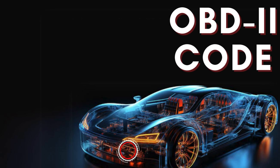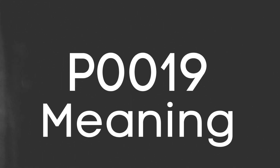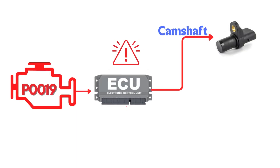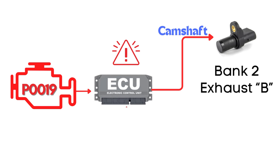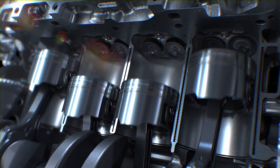Hey there! In this video, we're diving into everything you need to know about OBD-II trouble code P0019. The P0019 code indicates that the ECM has detected a correlation error between the camshaft position sensor for bank 2, specifically the exhaust camshaft, and the crankshaft position sensor. This means there's a misalignment between the camshaft and crankshaft positions.